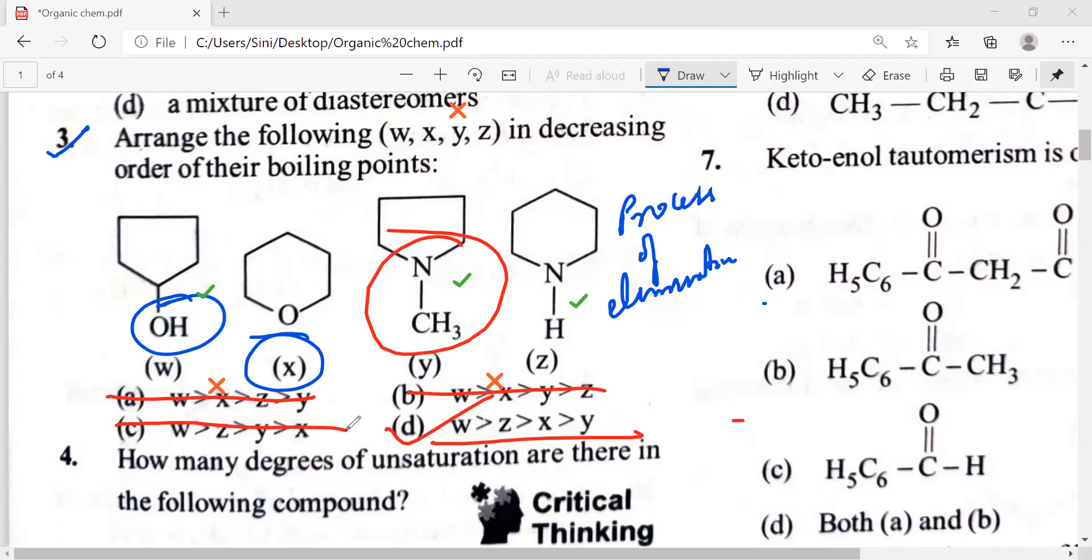So first itself, we will be eliminating this thing, that is 50% each. Because obviously, it should be w greater than z. Because in ether, there is no hydrogen bonding in this particular thing. So obviously option a and option b doesn't work. So there is 50% chance for us for getting the correct option.